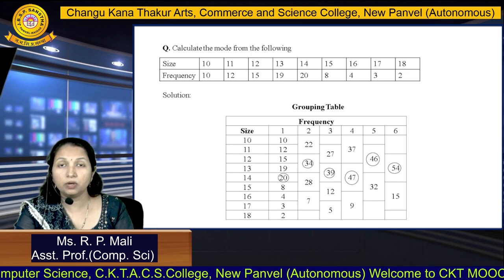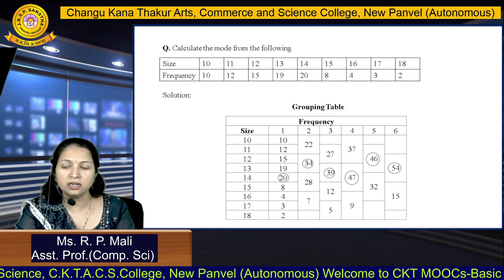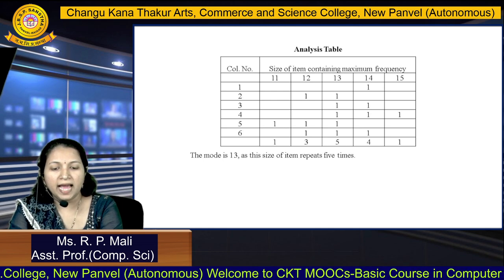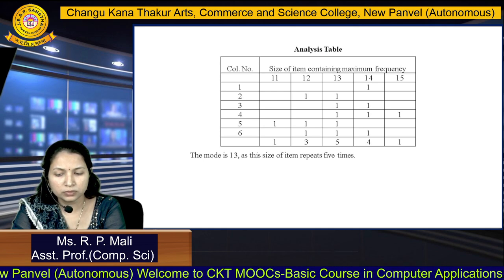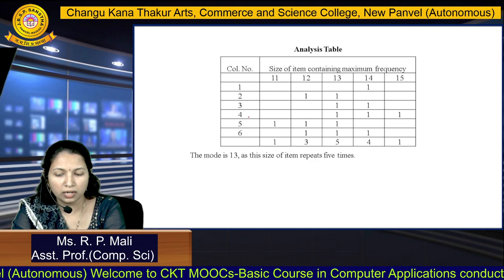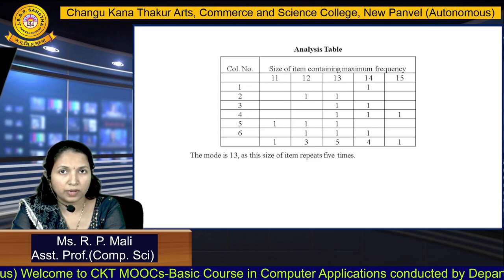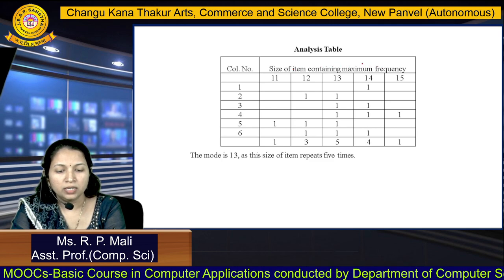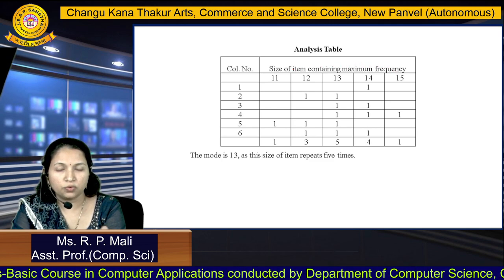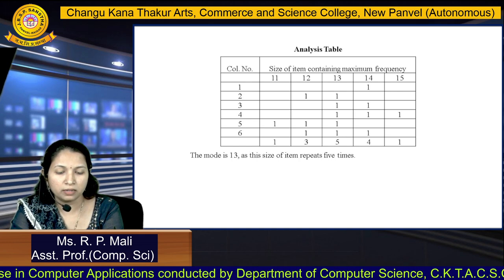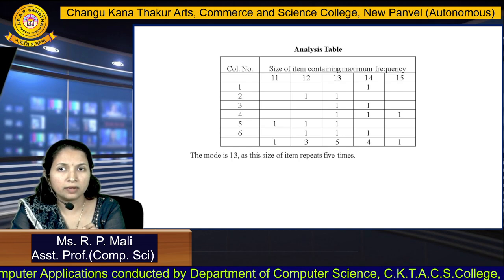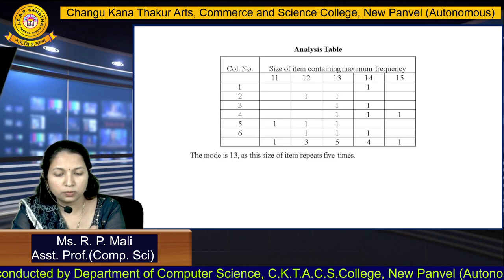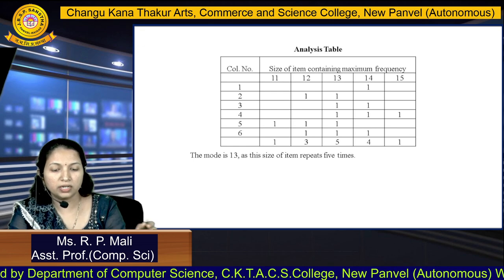After the grouping table, we prepare the analysis table. In the analysis table, we write the column numbers 1 through 6 and the size of items containing the maximum frequency. We only write the sizes that have the maximum frequencies: 11, 12, 13, 14, and 15.